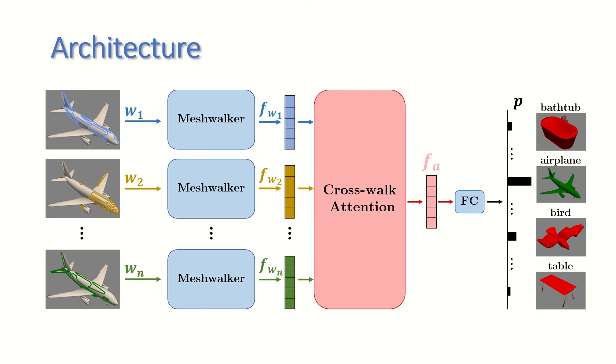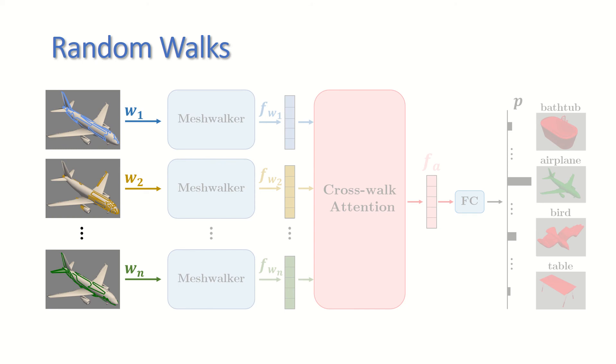This is an overview of our model. Given a mesh, n random walks are generated. Each wanders on the mesh exploring it. Three such walks are shown in blue, yellow and green. A random walk is a sequence of adjacent vertices, chosen at random.